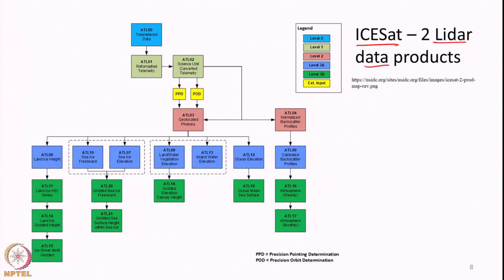This slide shows an example of LIDAR data products from the ICESat-2 satellite, specifically from the ATLAS sensor. Here also we have data from level 0 to level 3. Level 0 is whatever the satellite is sending. Level 1 data is the reformatted telemetry data converted into science units — basically the distance and other parameters. When distance is combined with precise orbit determination parameters and precise pointing parameters, we can estimate the ground coordinates of each point — that is the basic principle of a LIDAR system.